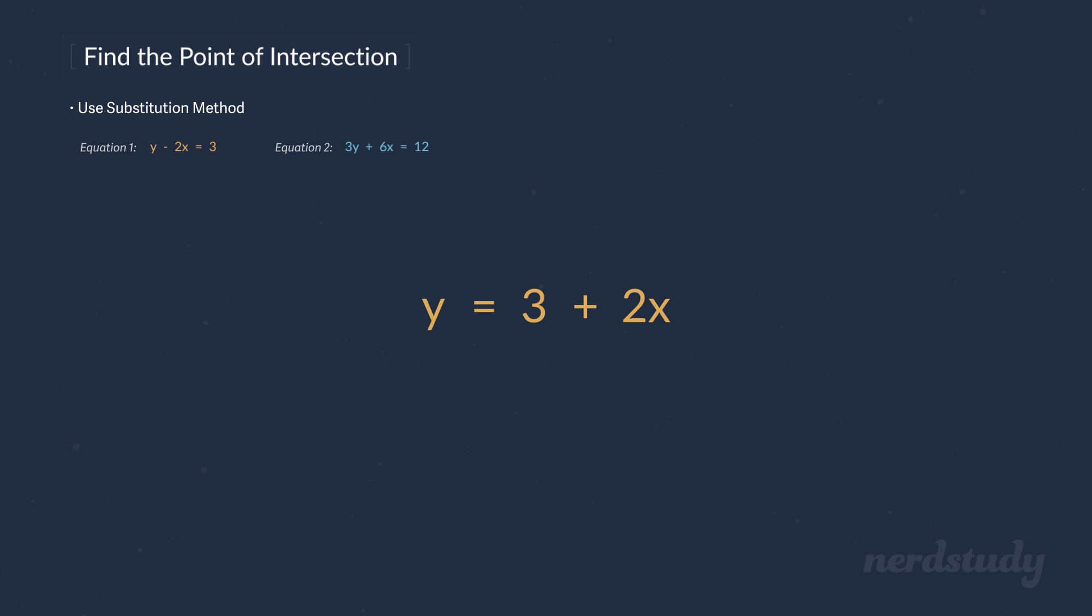Good. And now since we know for a fact that y equals 3 plus 2x, let's substitute this 3 plus 2x into the other equation. Where do we substitute it into? Well, remember that this equation said 3 plus 2x is equal to y. So we substitute it in replacement of y in the other equation.